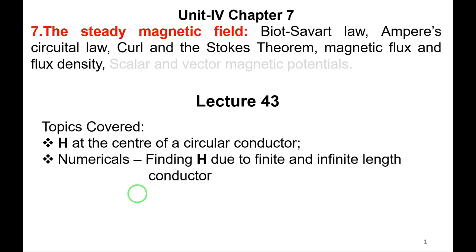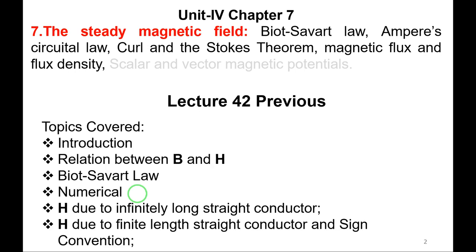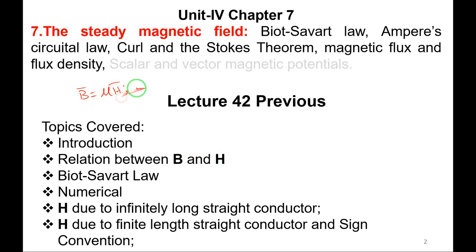Good morning students. We will start with today's lecture. In the previous class, we studied Unit 4, Chapter 7 - the study of magnetic fields. We saw the introduction, and the relation between magnetic flux density and magnetic field intensity: B = μH, where μ = μ₀μᵣ. For free space, B = μ₀H because μᵣ = 1.